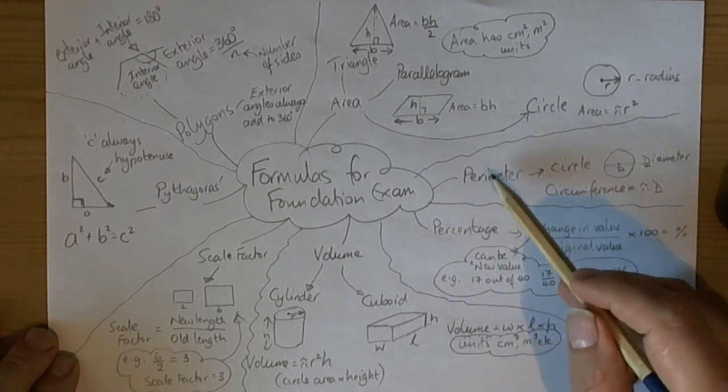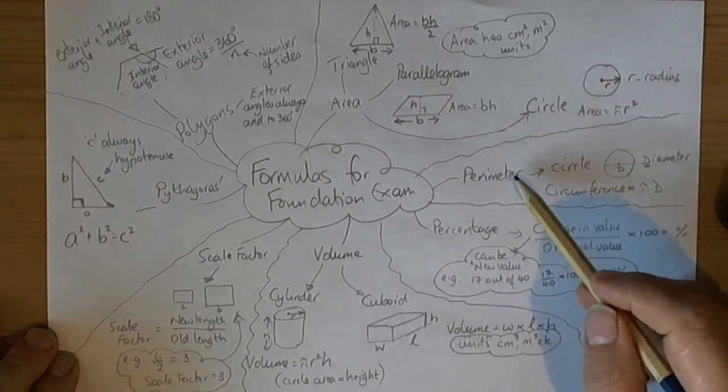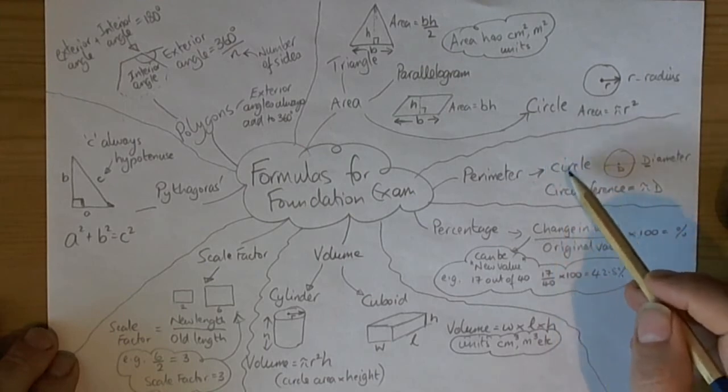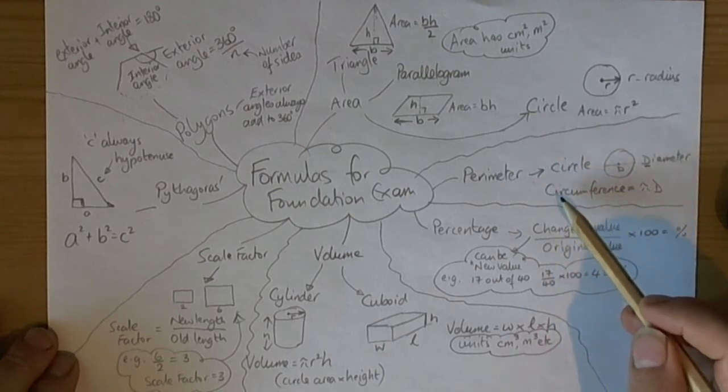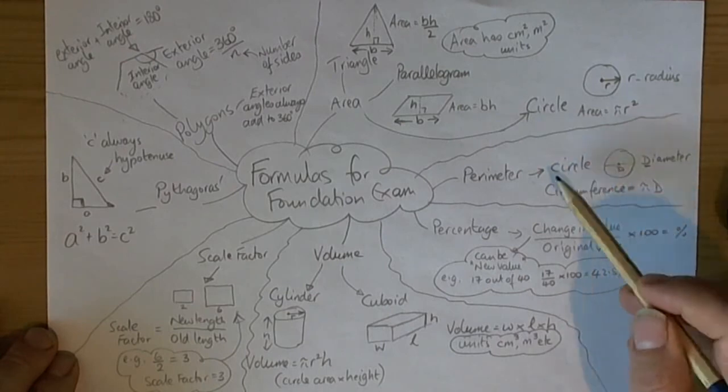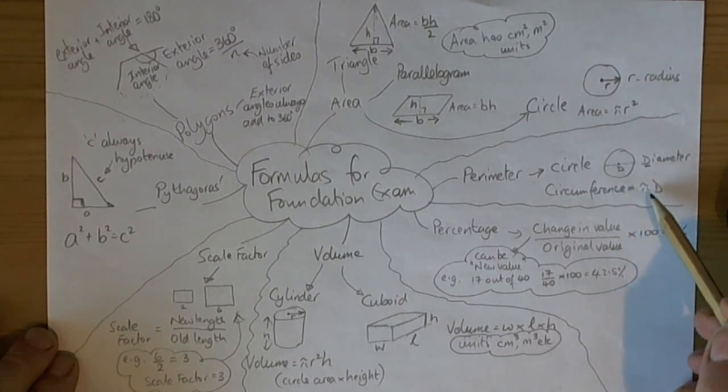For perimeter, we remember that the perimeter of a shape is the lengths going around the outside added together. The special one is for the circle, where we call the perimeter the circumference. Like the song says, pi r squared sounds like area to me, and for circumference I'll use pi d.